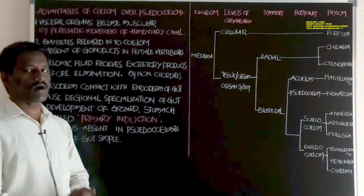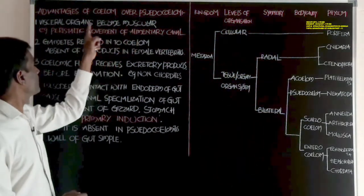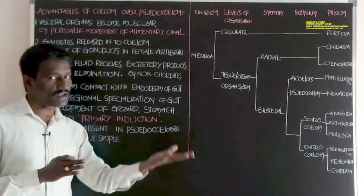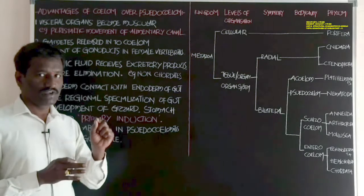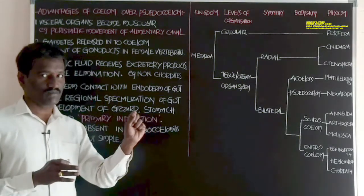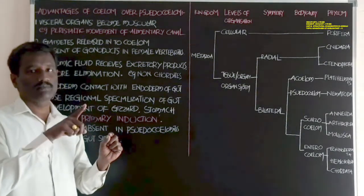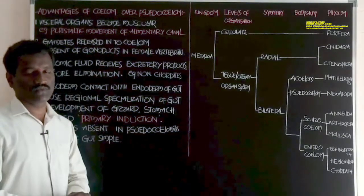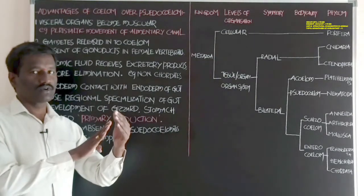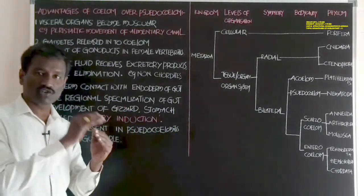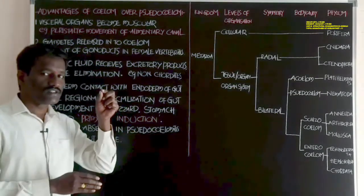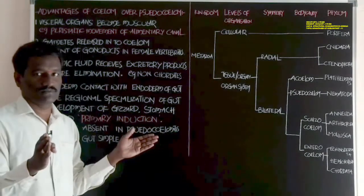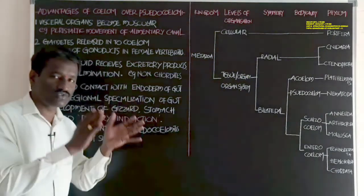Perivisceral cavity is present in the animals. In this, visceral organs become muscular. Visceral organs become muscular due to the attachment of the covering of the mesoderm layer. The mesoderm is present and is attached to the visceral organs. All the visceral organs are surrounded with the peritoneal layer of the mesoderm, surrounded with the mesodermal epithelium. Because of attachment of the mesoderm with the visceral organs or internal organs, these become muscular. And these organs, because of the presence of muscles, show contraction and relaxation, and move freely in the body cavity or true coelom in the animals.